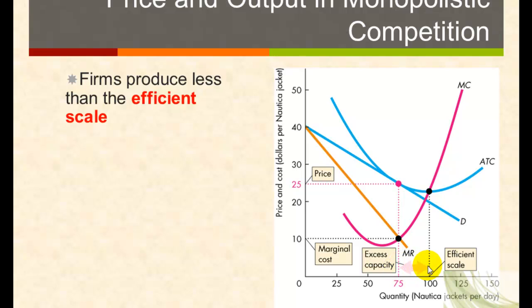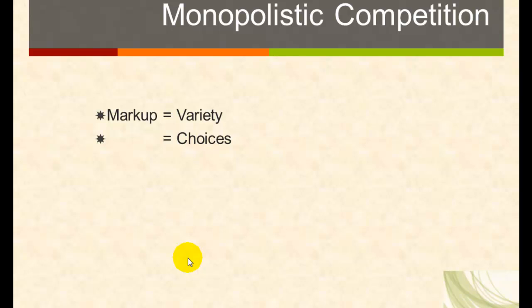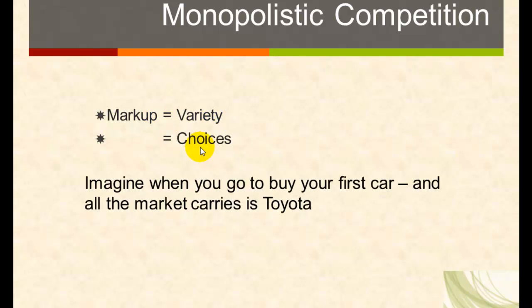The second concept is markup: price is greater than marginal cost in a monopolistically competitive industry. Firms in monopolistic competition produce less than the efficient scale — there is excess capacity — and there is a markup where price is higher than marginal cost. It's important to remember that this markup does give us variety and choices, and choices increase consumer welfare as well.